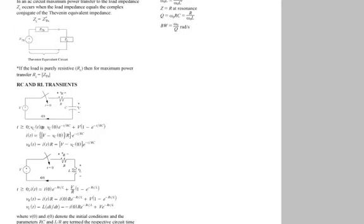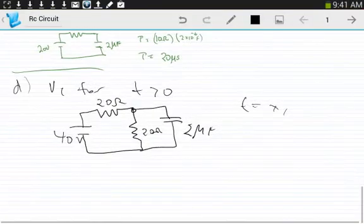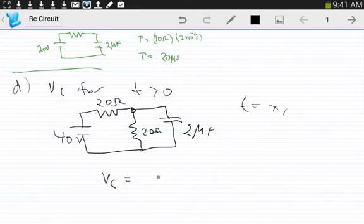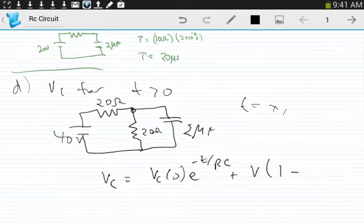And VC is going to be equal to VC at time equals zero plus supply voltage minus V times E to the T over time constant. Okay, I'm going to go back. I'm going to write that down.